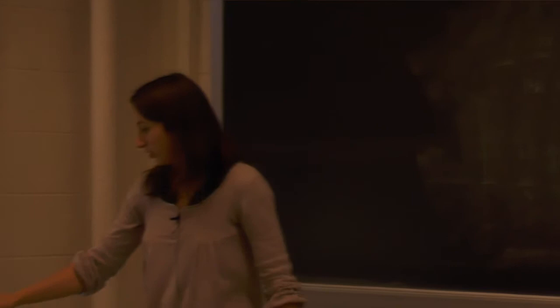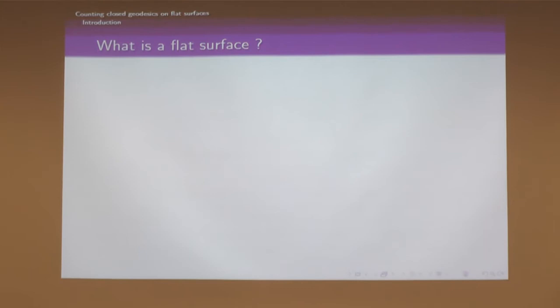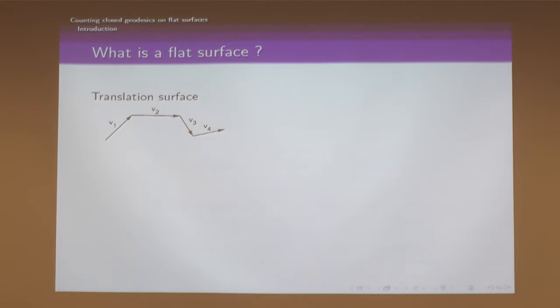I will begin with the definition of a flat surface. For me, a flat surface will be either a translation surface or a half-translation surface. What is a translation surface? You take a chain of vectors in the plane and draw the same vectors in different order from the same starting point, getting a polygon in the plane. If you identify sides defined by the same vectors by translation, you get what is called a translation surface.